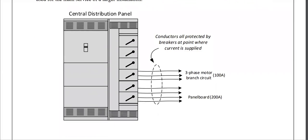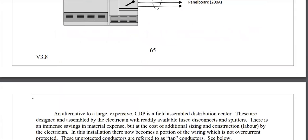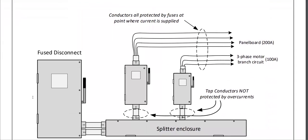Even on larger central distribution panels, all of the conductors are protected by the breakers at the point where current is supplied. It's only when we get into installations using a splitter that we have to start determining what size the tap conductors will be. A splitter is something where we're permitted to reduce the size of the conductor without having an overcurrent to protect it, and due to that, they're typically fairly short or restricted in length and encased in metal or protective armored cable.